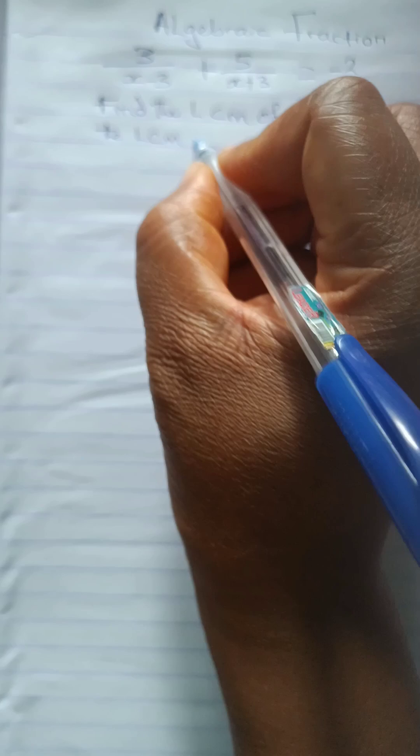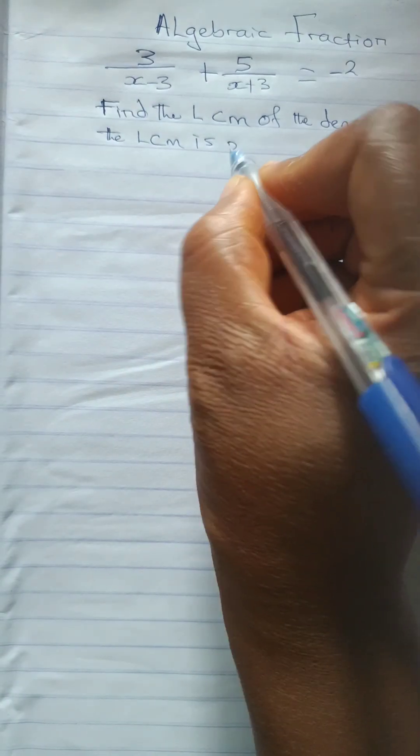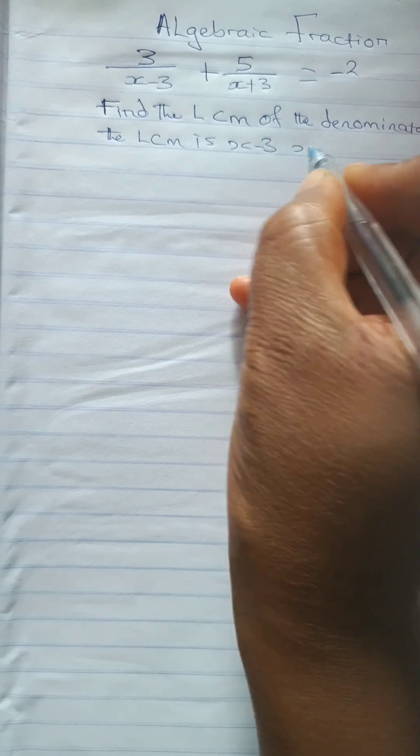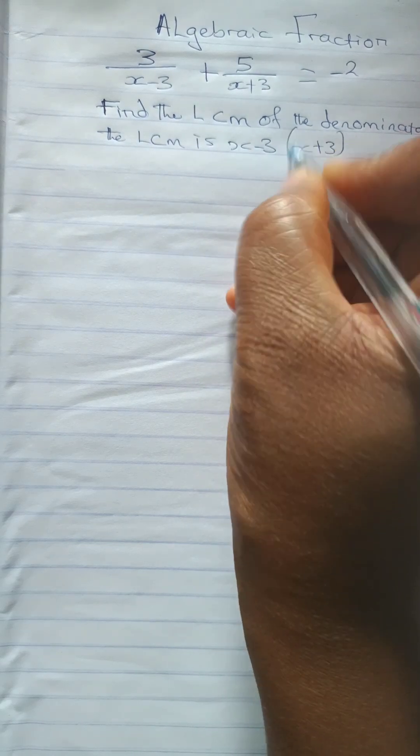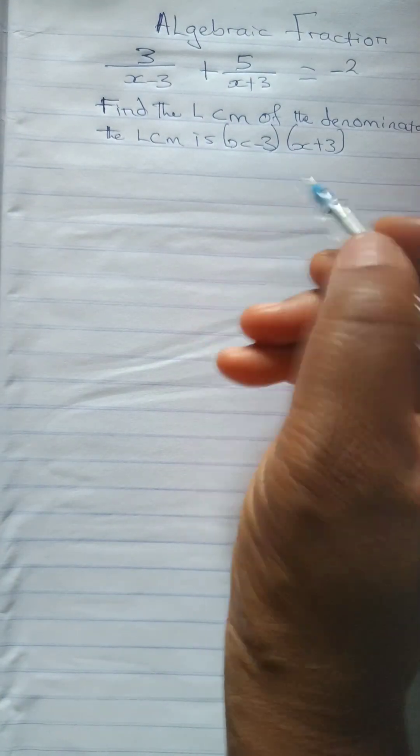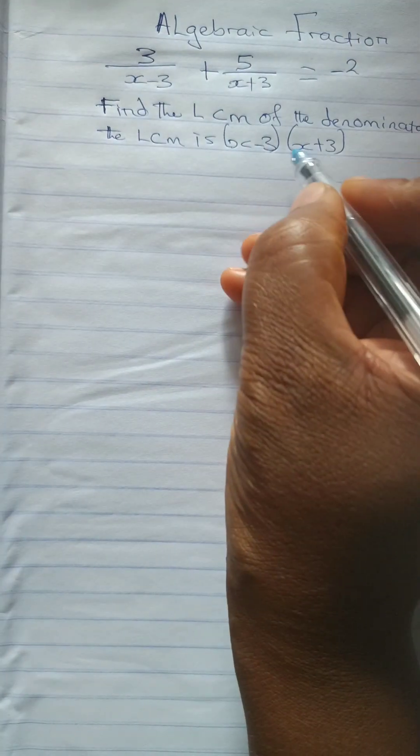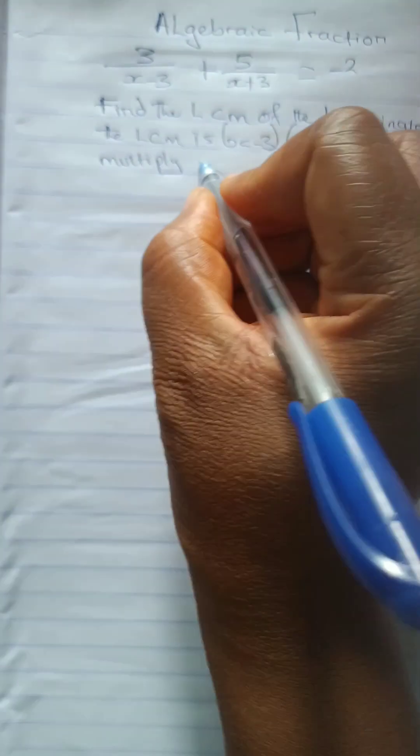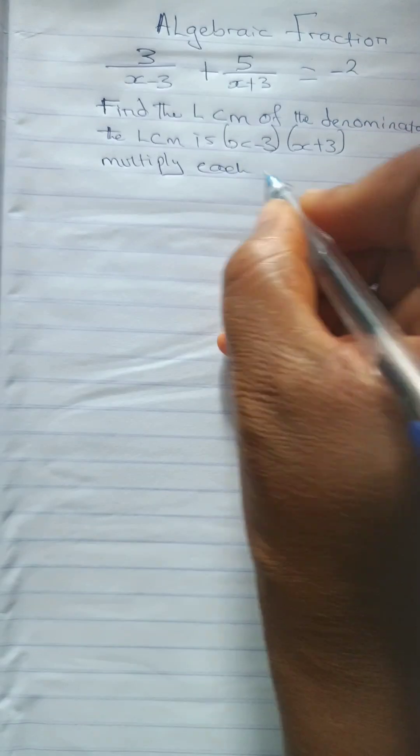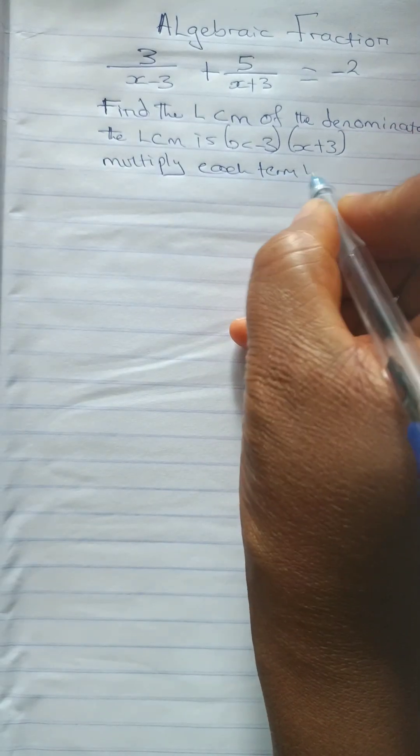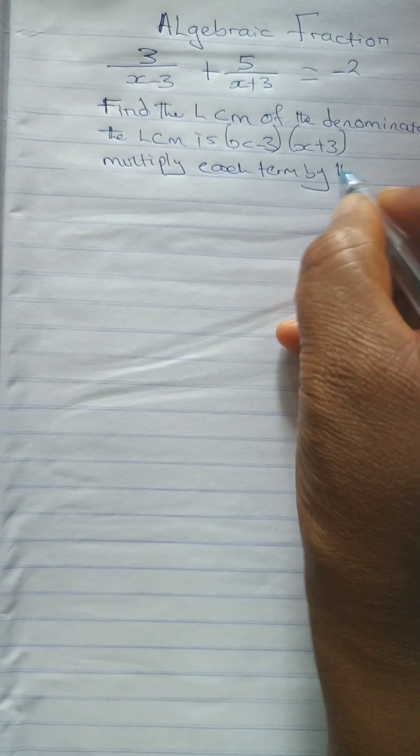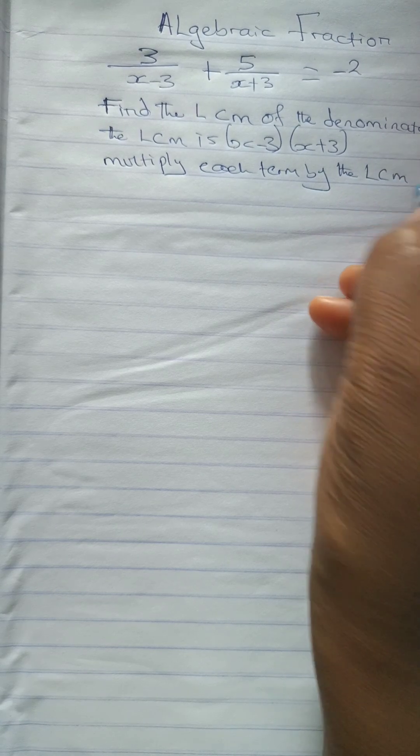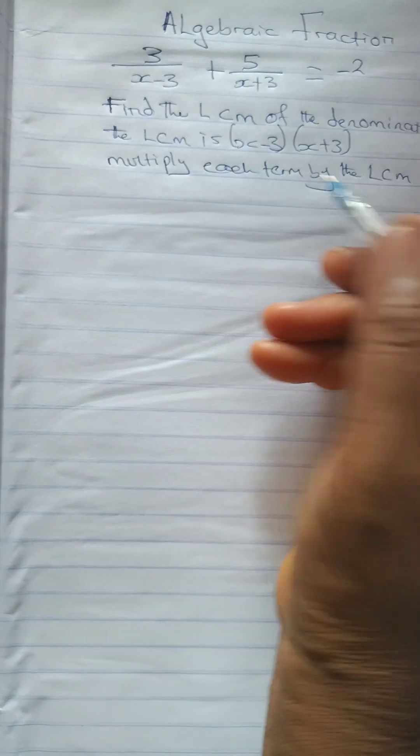The LCM of this is x minus 3 and x plus 3. So these are the LCM for this. This is the LCM for this. So now we multiply each term. Multiply each term by the LCM.